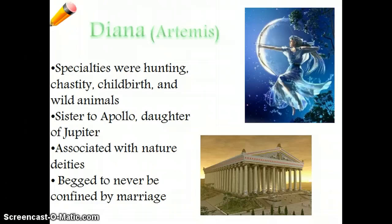Then we have Diana, Apollo's sister, known as Artemis to the Greeks. She's the goddess of hunting, chastity, childbirth, and wild animals. She's associated with nature, and she had begged Jupiter — or Zeus — to never have to get married because she didn't want to be confined by marriage and have to obey her husband.